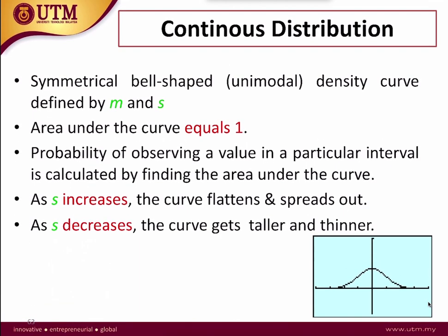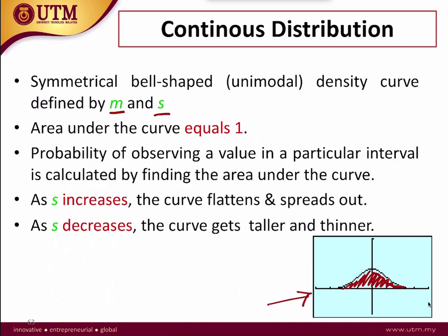For continuous distribution, it is represented by a bell-shaped graph, where everything under the graph is considered as one. It is defined by M (the mean) and S (the standard deviation). Knowing the mean and standard deviation is very important for continuous distribution. If the standard deviation increases, the curve will flatten and spread more evenly.